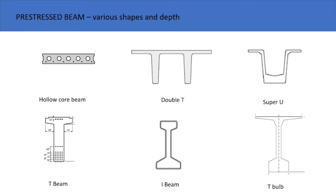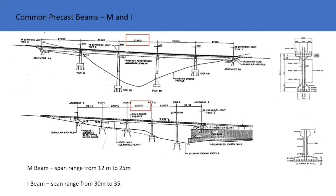Some of the beams used by various countries are shown in this slide. The two common types of the precast beam are the I beam and the M beam, shown here with the corresponding elevation of the bridge. There are no significant differences between the two bridge designs. Both are simply supported and supported on elastomeric rubber bearings, using free and fixed bearing concepts.